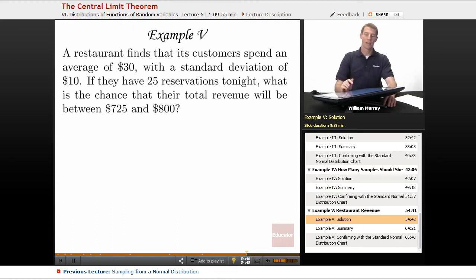We have a restaurant that is worried about how much money it's going to make tonight. It has done some studies and found that its customers spend an average of $30 per customer, but they have a standard deviation of $10. Maybe if somebody just has an appetizer and a drink, they only spend $20. Maybe if they go for the full menu with drinks and dessert, they're going to end up spending $40 or even more.